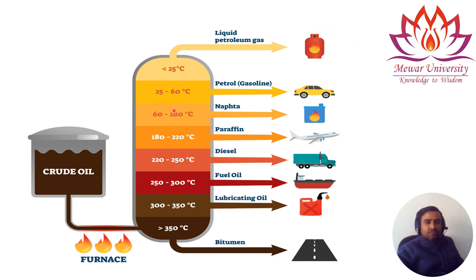For boiling points from 25 to 60°C, gasoline or petrol is collected — this is the fuel used in cars. From 60 to 180°C, we get naphtha, which is heavier than petrol and is a mixture of many hydrocarbons. Naphtha is used as feedstock for the petrochemical industry, from which we obtain petrochemicals like ethylene, propylene, butylene, styrene, methanol, and xylene.